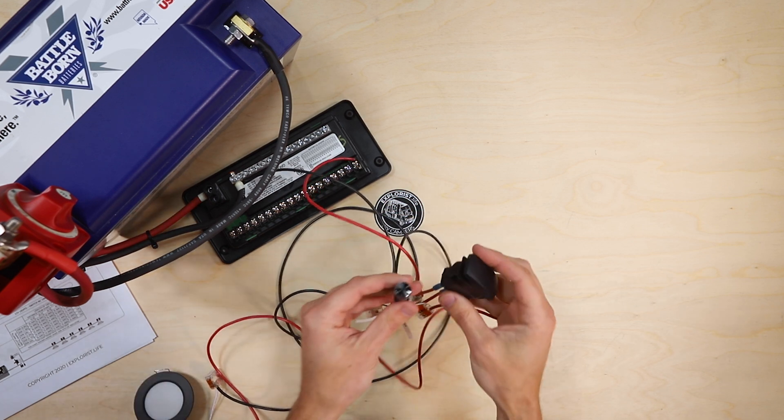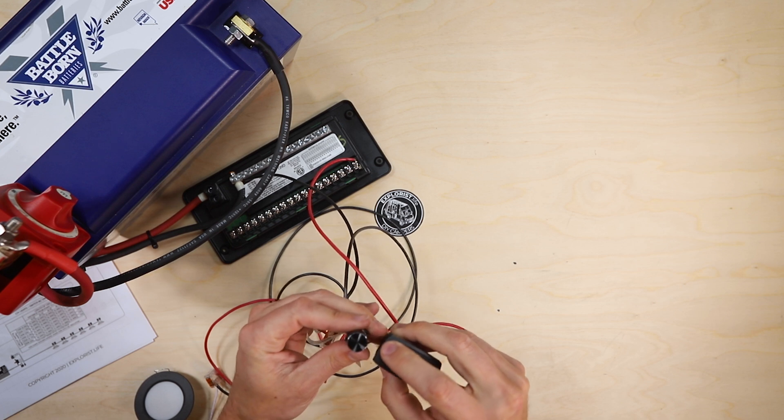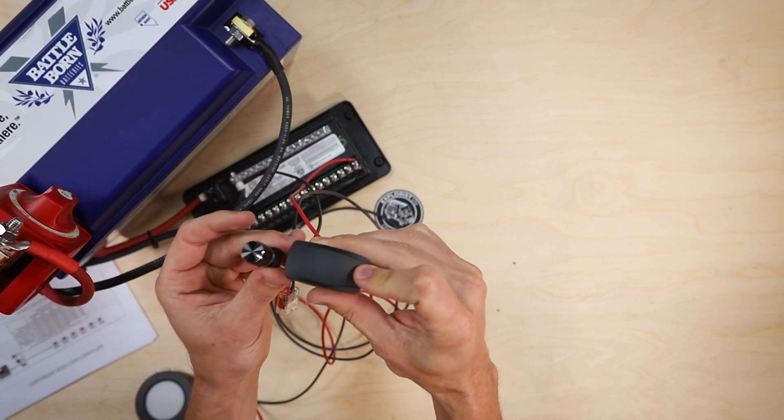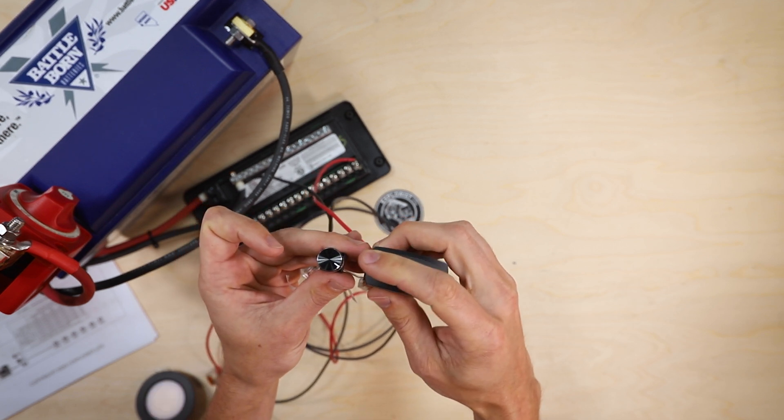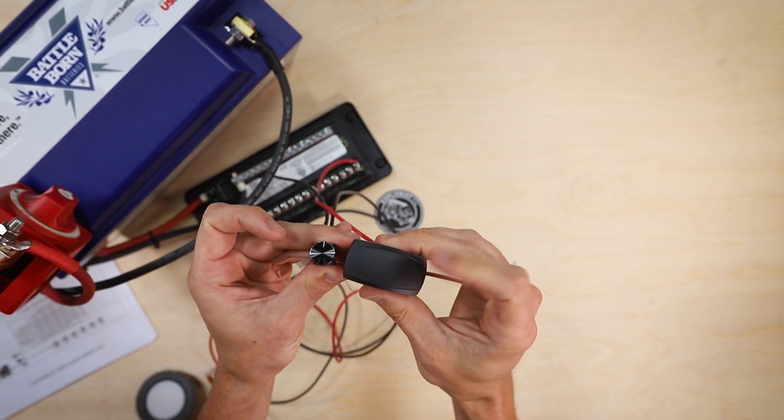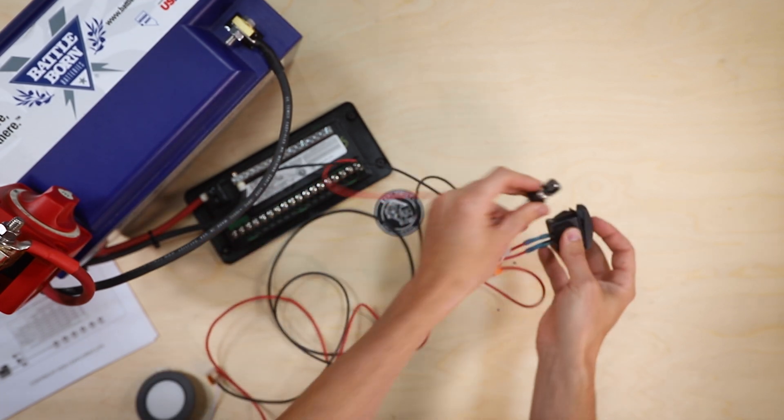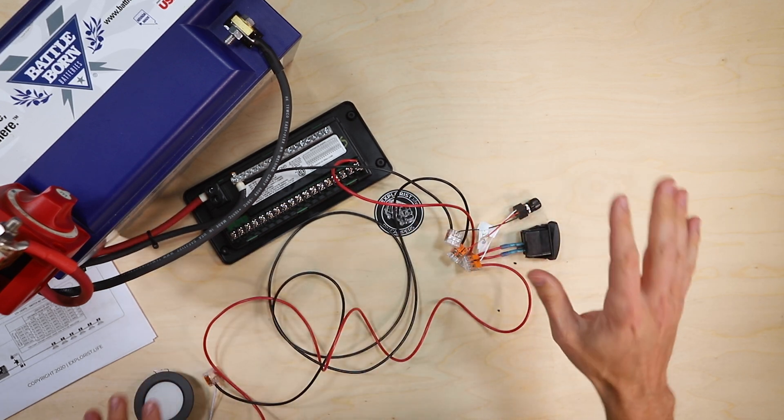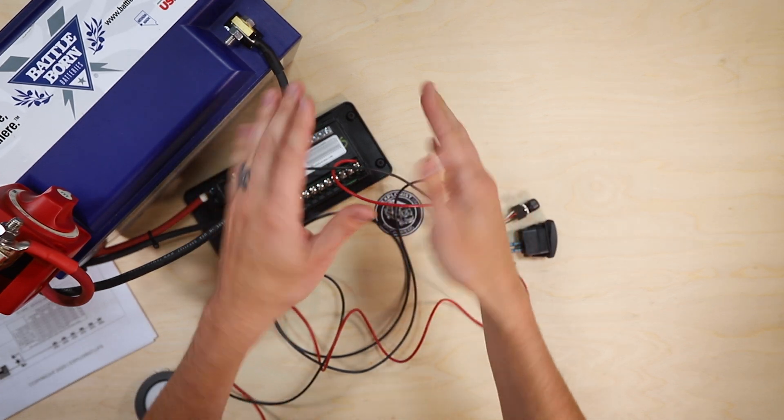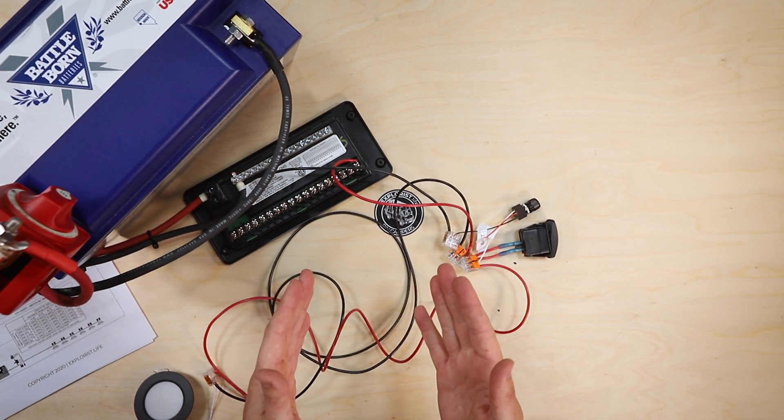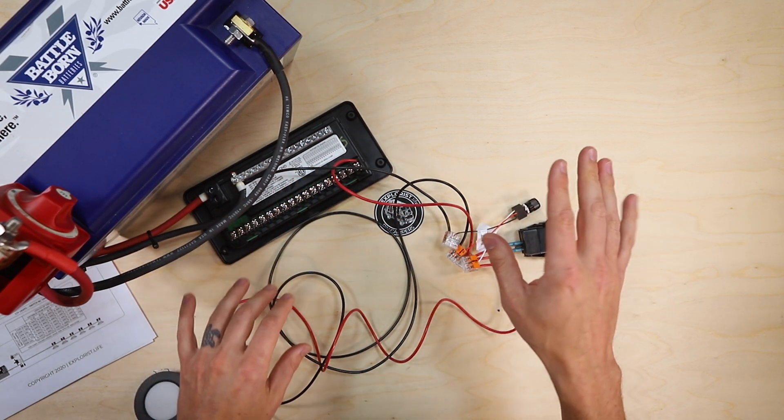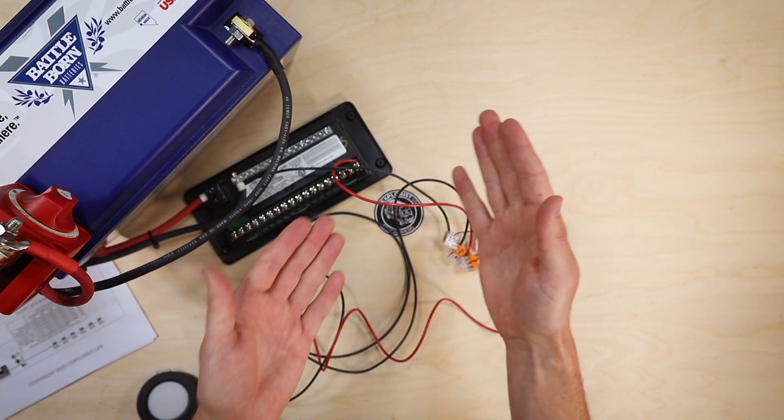Now we have a fully functional dimmer switch in this lighting circuit here. So whenever we get this actually fastened in the van, this dimmer switch is just going to live right above or right under, I haven't decided yet, the actual on off switch right here. So we'll be able to turn the circuit on, adjust the dim or brightness level, turn the circuit off, nice and neat. So we are actually going to be installing this dimmer switch into the circuit inside of the van that we showed last week with all the lights going down the center of the van.